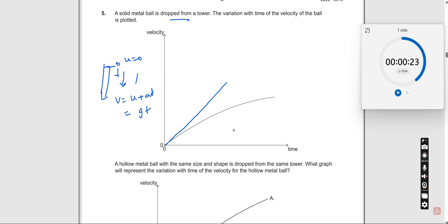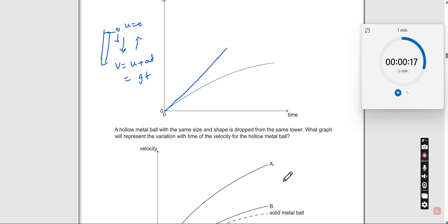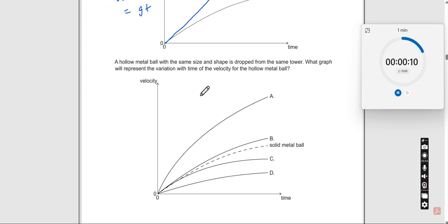Now a hollow metal ball with the same size and shape is dropped from the same tower. Instead of dropping a solid ball, I am dropping a hollow ball. What graph will represent the variation with time t of the velocity of the hollow metallic ball?